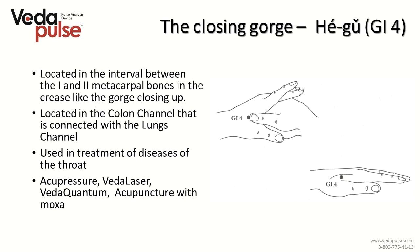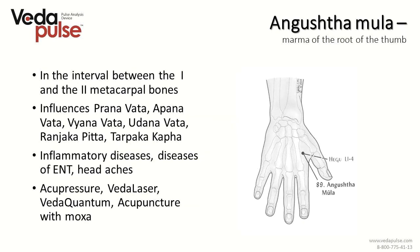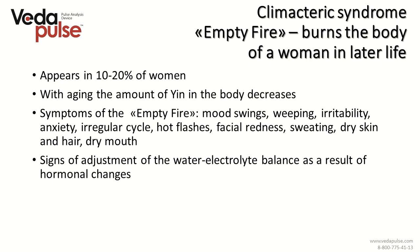The point Hegu, influenced through massage to the point of painful sensation, warming with a needle with moxa or physiotherapy, has a very powerful effect — located in the large intestine channel, it can even cut the disease off at the stage of its development in the throat. Its Ayurvedic equivalent is Angushtha Mula — 'marma of the root of the big finger' — which controls Prana Vata effectively, controls stress and tension, and supervises inflammatory diseases of ENT organs, especially sinusitis. The next syndrome is the climacteric syndrome — or empty fire that burns the body of a woman in later life. Specialists of Ayurveda and TCM have found appropriate methods of treatment. The syndrome manifests as dehydration of the body, bringing emotional issues and dryness of skin and hair, based on restructuring of the water-electrolyte balance due to hormonal changes.